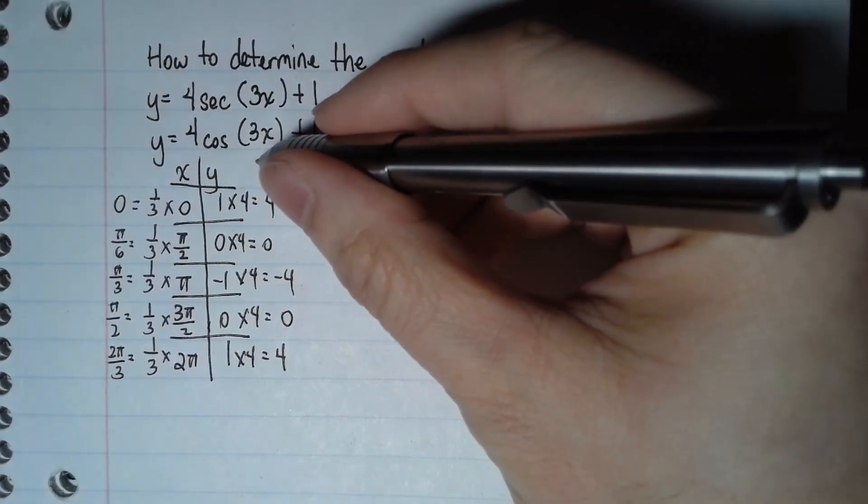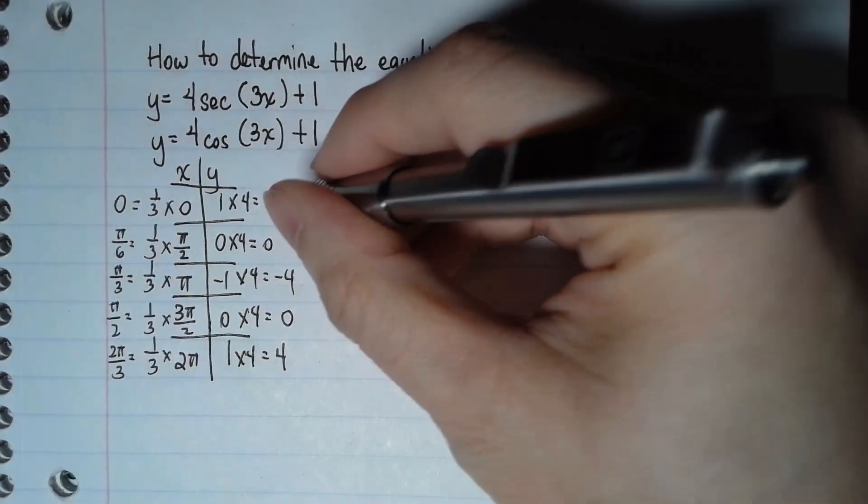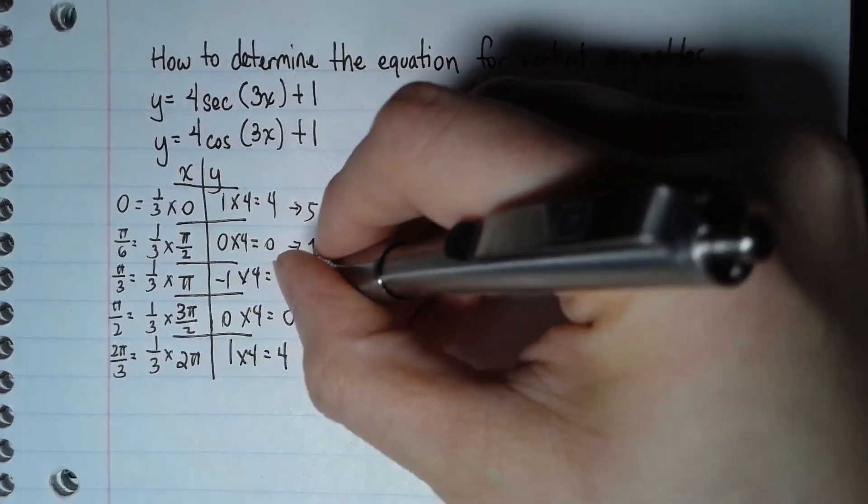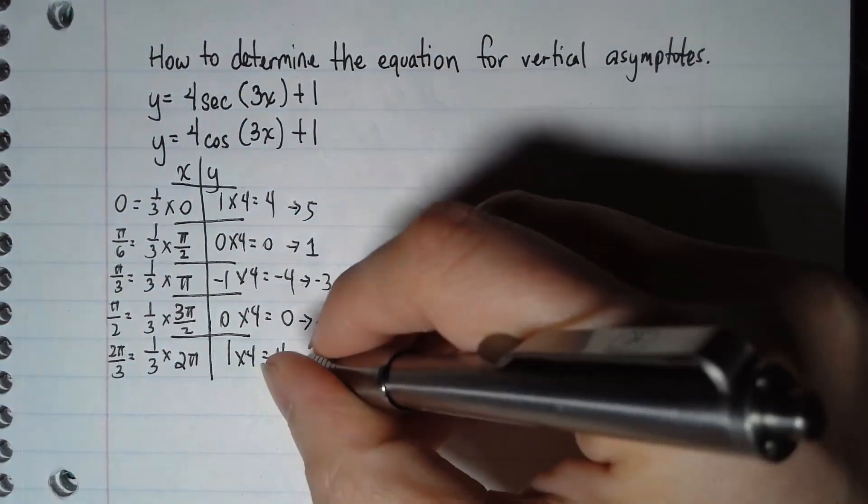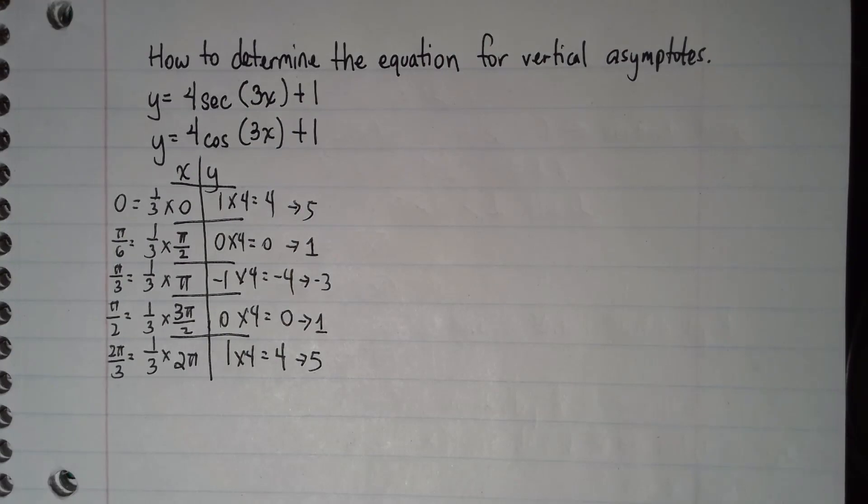And that will become 0, π/6, π/3, π/2, and 2π/3. And this here tells me to add 1 to the y, which is outside the parentheses. So plus 1 that will give me 5, 1, and then a 5.